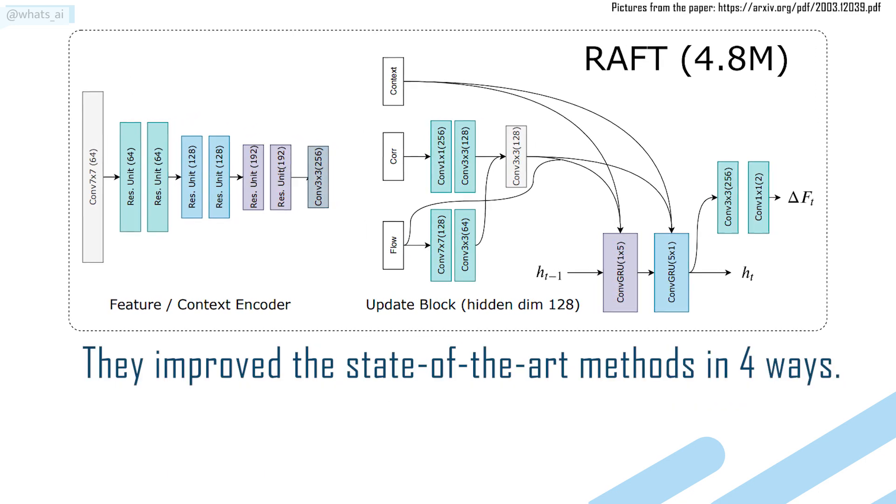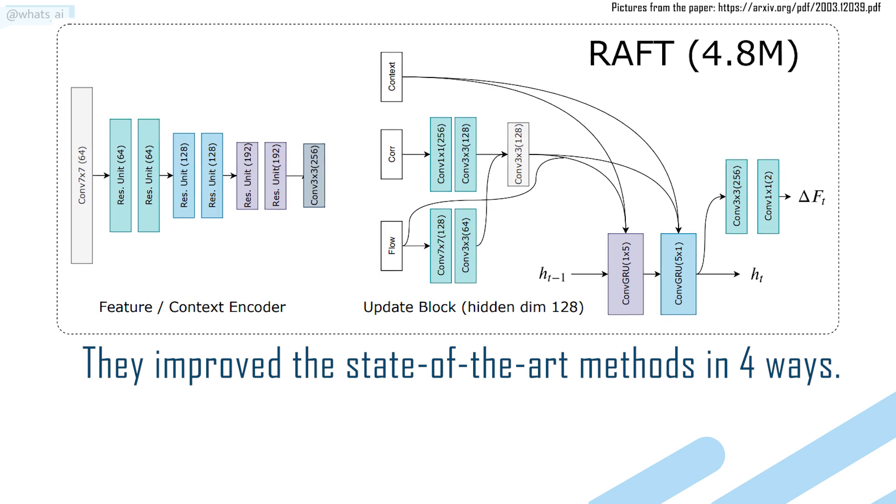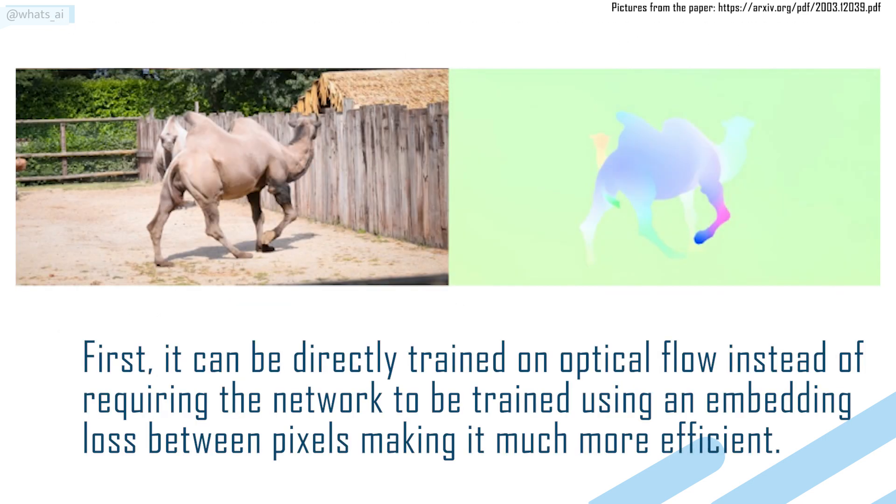They improve the state-of-the-art methods in four ways. First, it can be directly trained on optical flow, instead of requiring the network to be trained using an embedding loss between pixels, making it much more efficient.